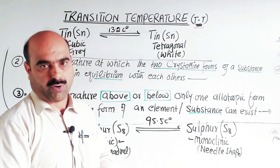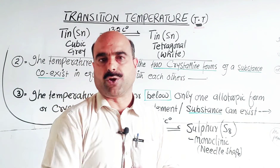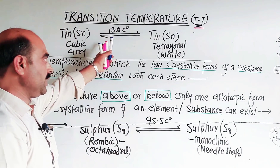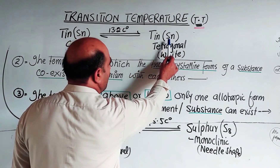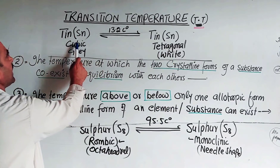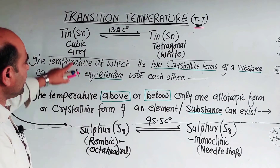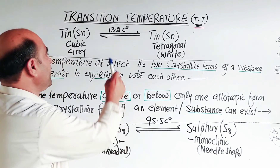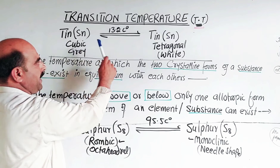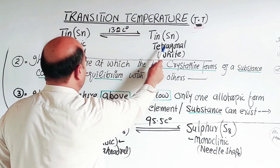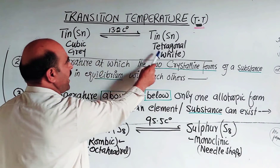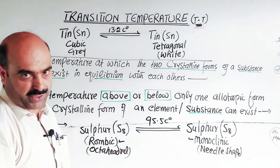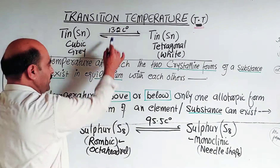When tin is in a molten state and then undergoes cooling, when the temperature reaches 13.2°C, the tetragonal crystal shape transforms and the cubic shape is formed — the white color becomes gray. At 13.2°C, the two states — tetragonal/white and cubic/gray — are simultaneously present. This temperature is known as the transition temperature.